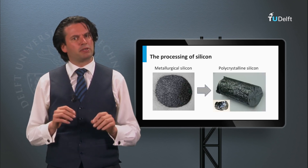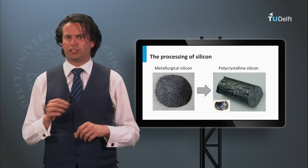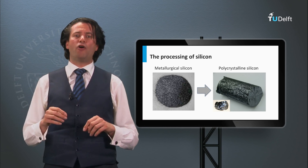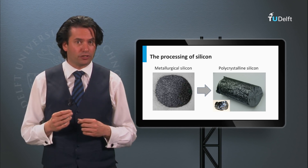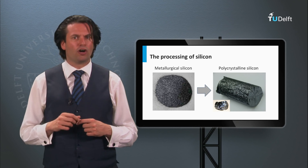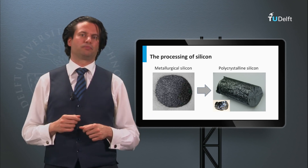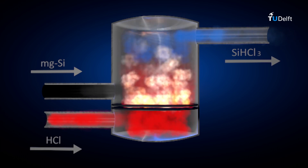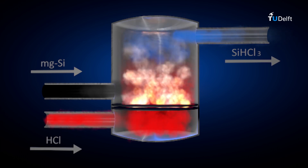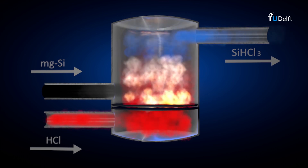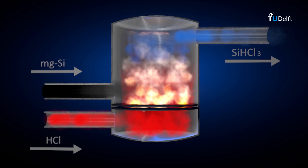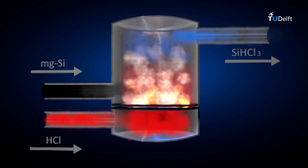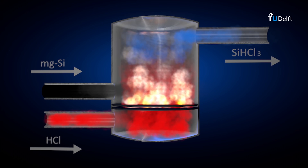The silicon material with the next level of purity is called polysilicon. In the next animation you see how rods of polysilicon are produced from metallurgical silicon. The source material is powder of metallurgical silicon, which is then exposed in a reactor with hydrogen chloride at elevated temperatures in the presence of a catalyst. The silicon reacts with the hydrogen chloride and starts to form trichlorosilane.